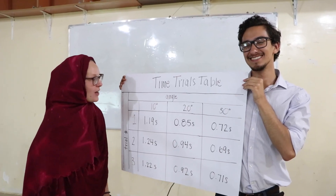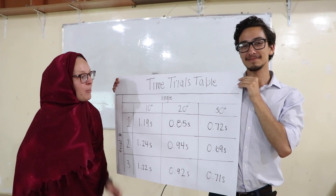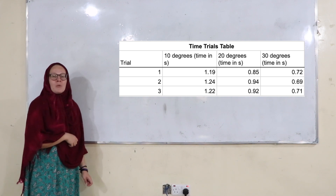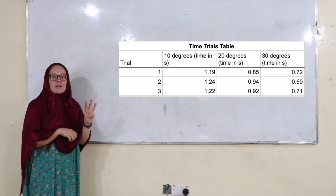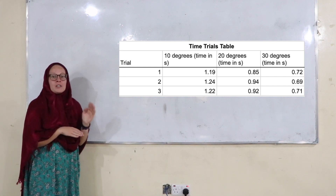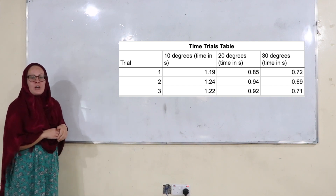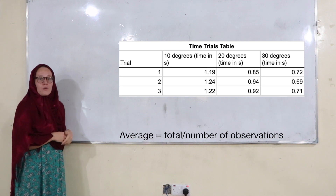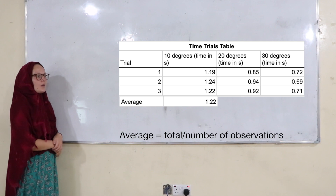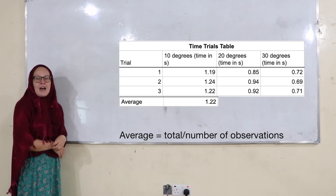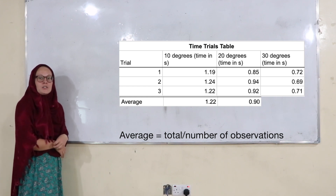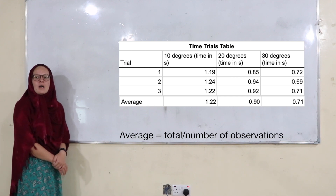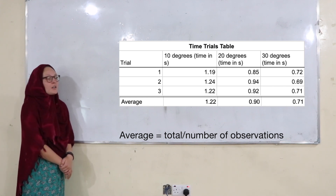Here's our completed data table after three trials at each of the three different angles. If you missed any, feel free to pause the video and write them down. Let's take an average of each of these times so that we can have a clearer picture of our results. To take an average, you need to add together the three different times for each of the angles and then divide that number by the total number of trials. At 10 degrees we get an average of 1.22 seconds. At 20 degrees it took an average of 0.90 seconds. And at 30 degrees it took approximately 0.71 seconds for the car to move from the top of the track to the bottom.